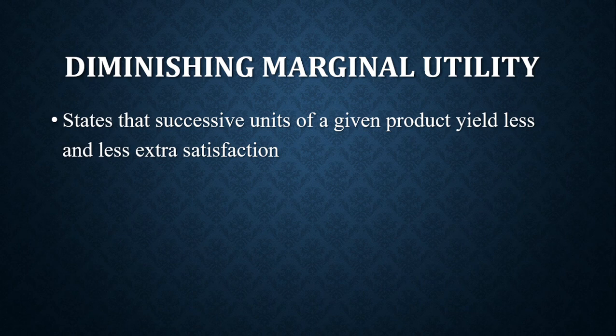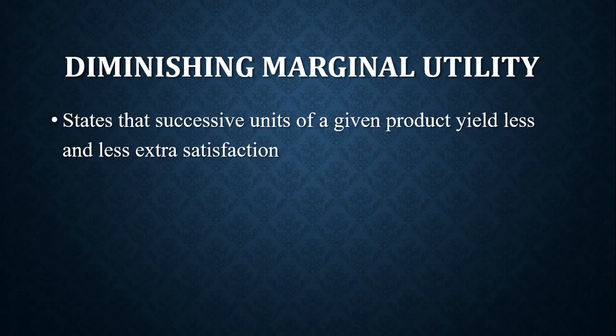For example, if you are extremely thirsty and given a sachet of water, the first sachet gives you very high satisfaction. The second sachet gives you some satisfaction, but lower than the first. The third gives even less satisfaction. So diminishing marginal utility explains that the more you consume a commodity, your satisfaction reduces.